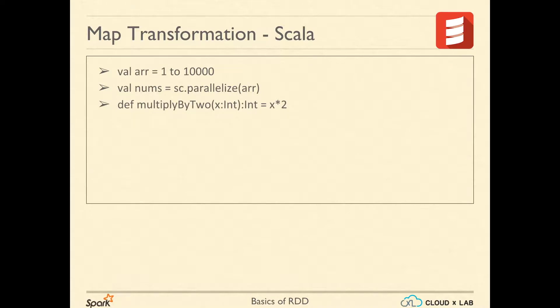Again, this function is just like any other function in Scala. It is independent of Spark. Now, let's check if this function is okay. Let's run multiply by 2 with 5. It has printed 10 which is correct. You can call this function with any other number.